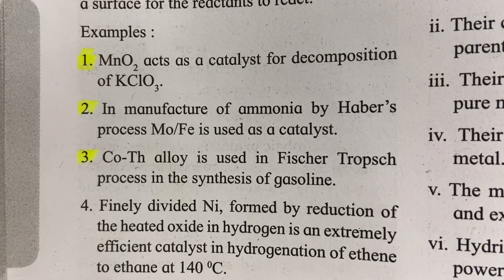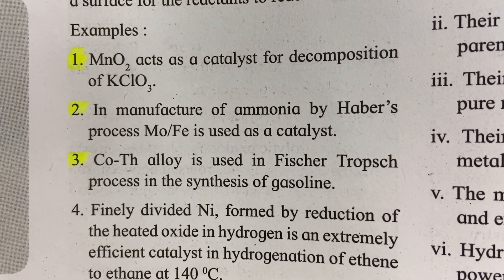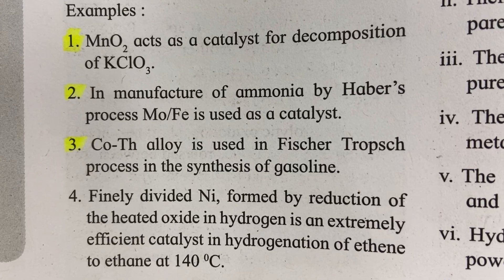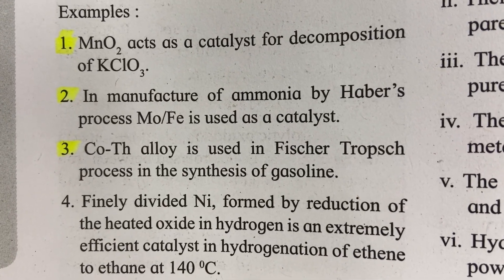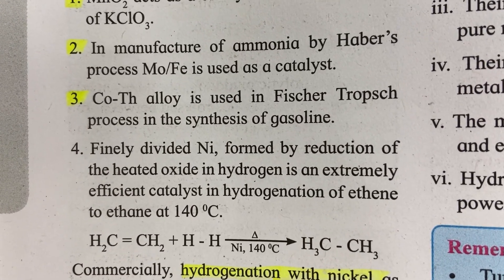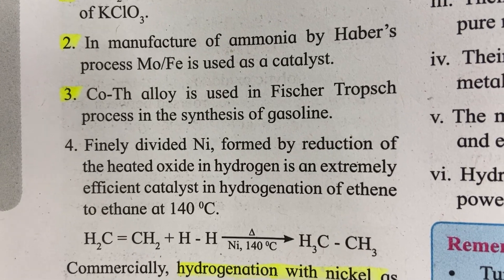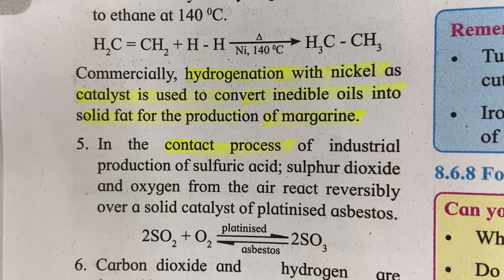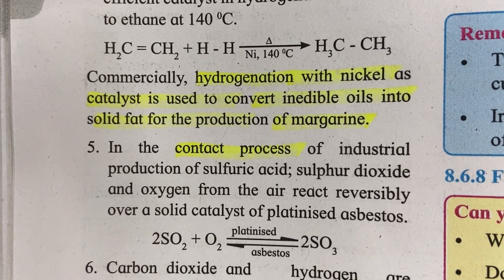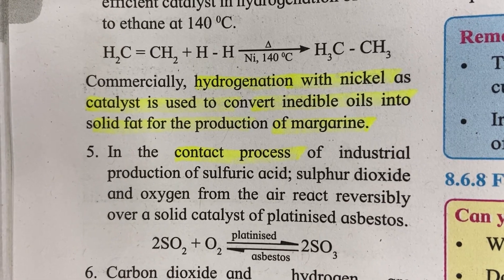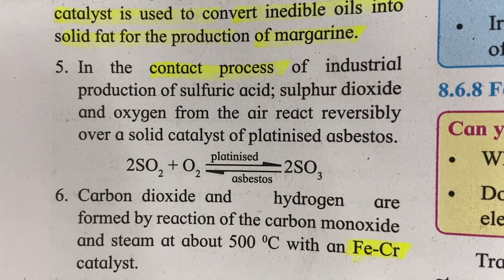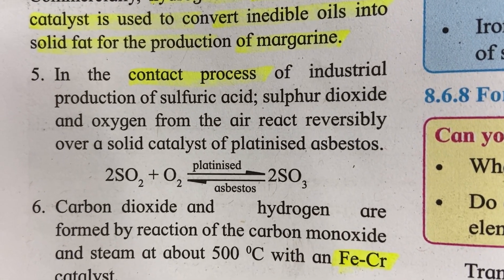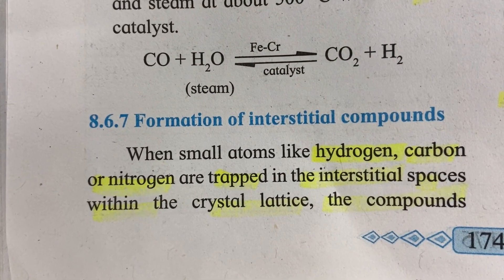The decomposition of potassium chlorate uses MnO₂ as a catalyst. In the Haber's process for the manufacture of ammonia, Mo or Fe is used as a catalyst. Co-Th alloy is used in the Fischer-Tropsch process for the synthesis of gasoline. Catalytic hydrogenation using nickel as a catalyst converts edible oils into solid fat for the production of margarine. In the contact process for the manufacture of sulfuric acid, sulfur dioxide is converted into sulfur trioxide using platinized asbestos as a solid catalyst.